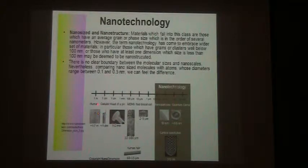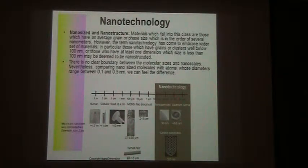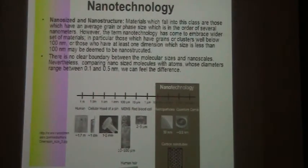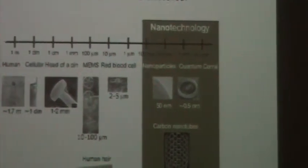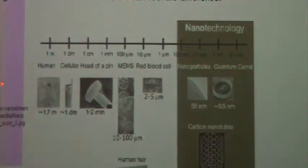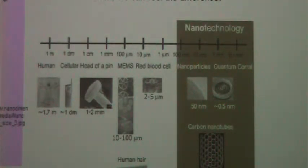Here you have a scale: human dimension, cellular, head of the pin. During medieval times in Europe, theologians were debating how many devils could sit on the tip of a pin — there were big books about this. We also have human red blood cells, human hair, all these dimensions. Nanoparticles, quantum dots, carbon nanotubes: two to five nanometers.